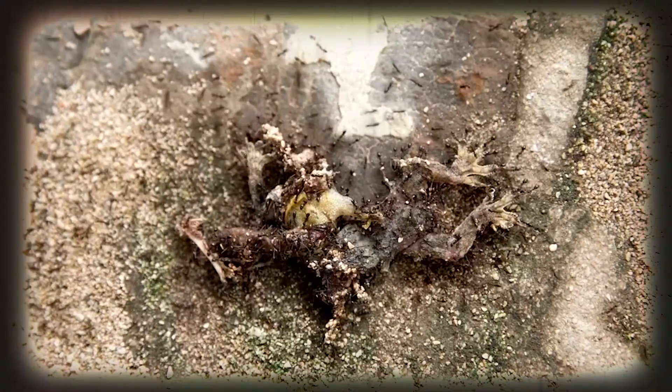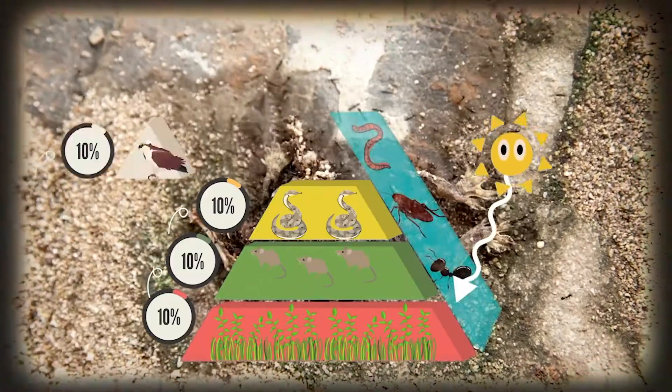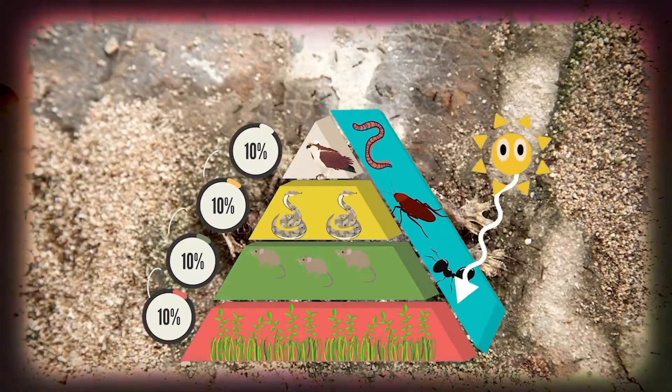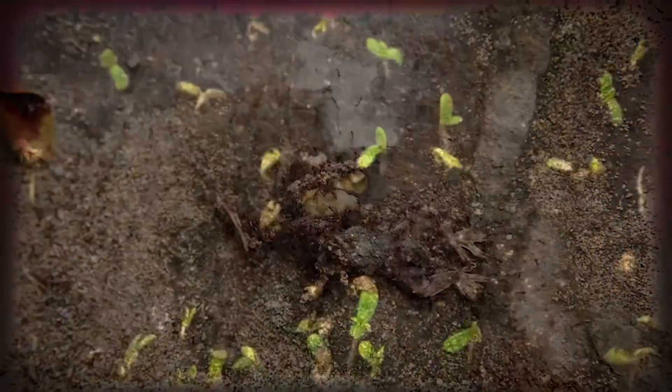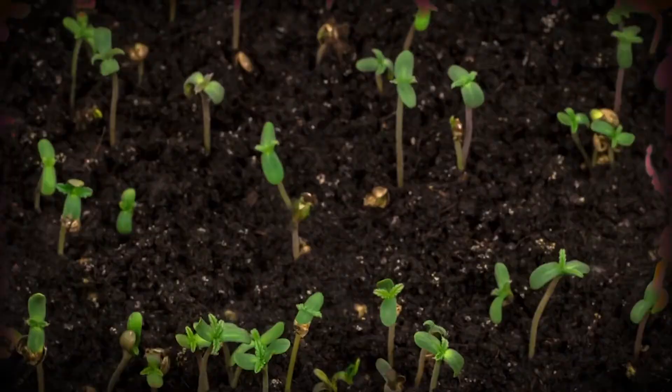Even when an animal or plant dies, decomposers get the energy they need to grow, and the soil gets energy in the form of nutrients that help producers keep producing. The cereal I ate this morning had potential, or stored energy. But once my body starts to break it down, that stored energy is released, and my body can use it to move and my brain can use it to think.